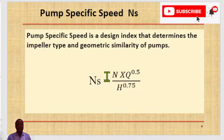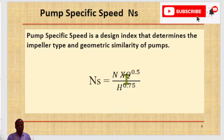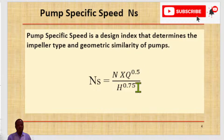Ns denotes the pump specific speed. N is the rotational speed of the pump, expressed in RPM. Q is the total pump flow rate, expressed in cubic meters per second for a single suction impeller. For double suction pumps, Q is taken as half of the total capacity of the pump in this expression.